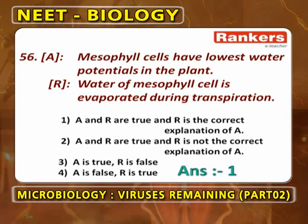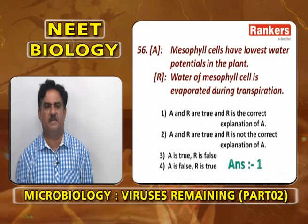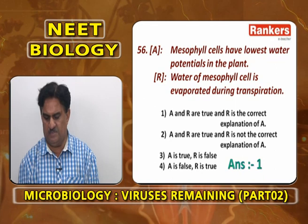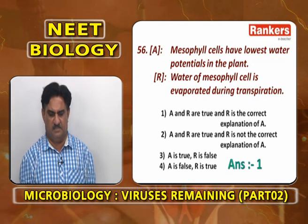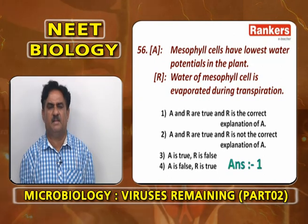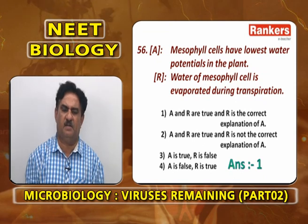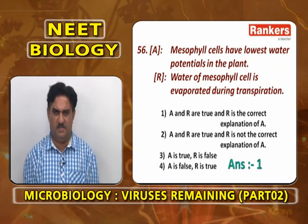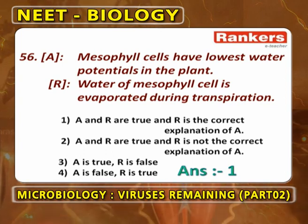Assertion-reasoning: Mesophyll cells have the lowest water potentials in plants. When sunlight falls on the leaf, the mesophyll cells continuously lose water by transpiration through stomata by diffusion. Because water of mesophyll cells is evaporated continuously during transpiration, mesophyll cells have the lowest water potentials in the plant. So A and R are true, R is the correct explanation of A.